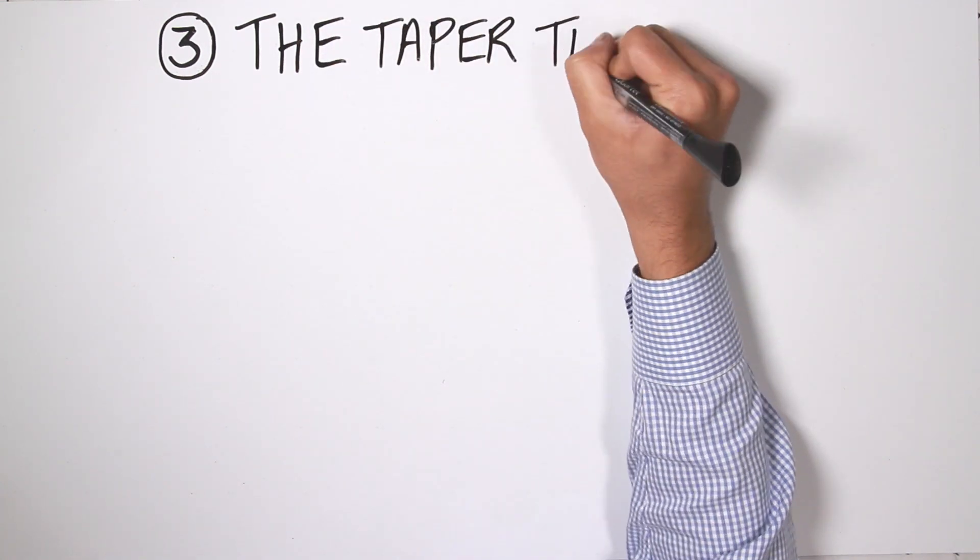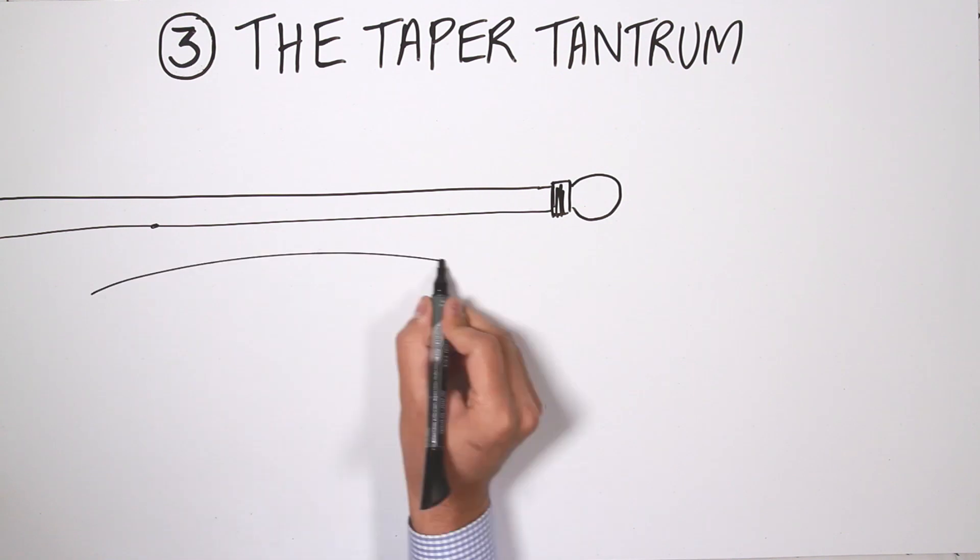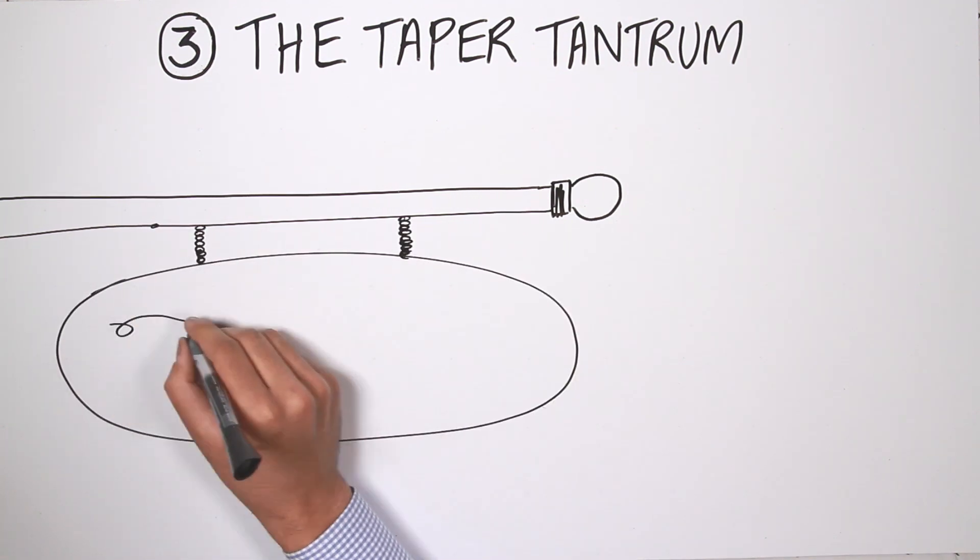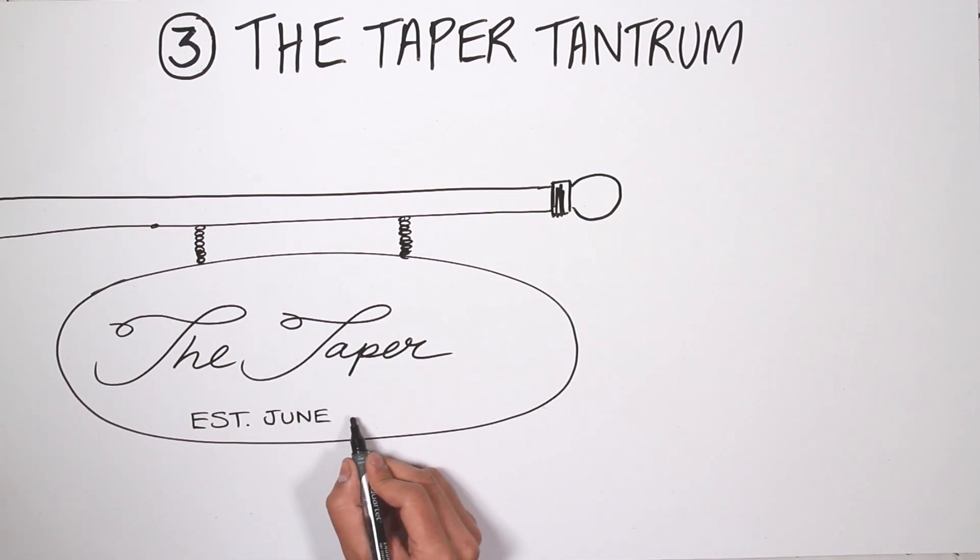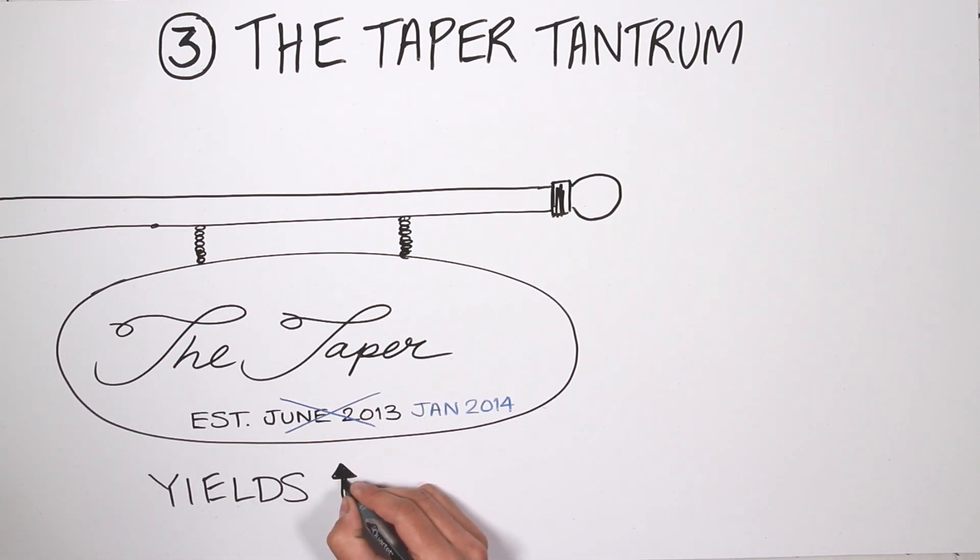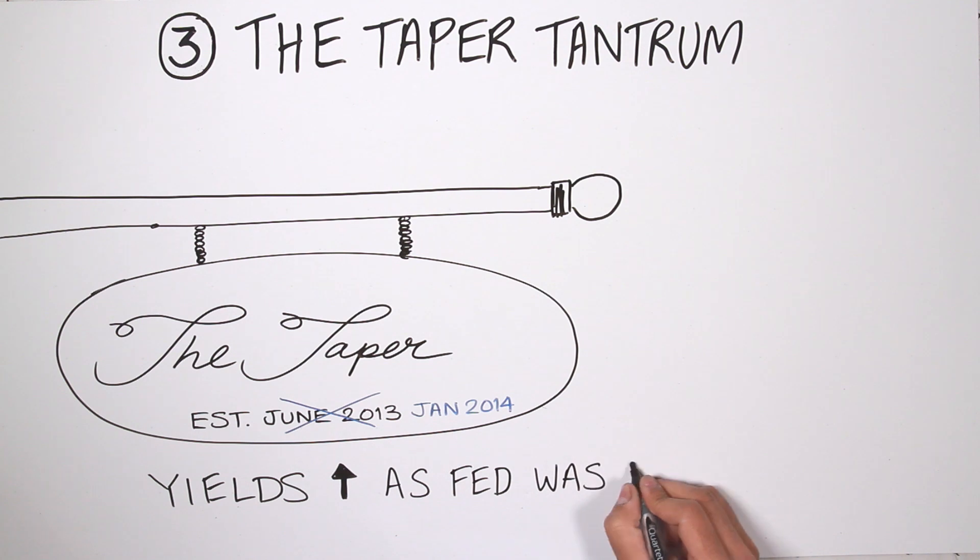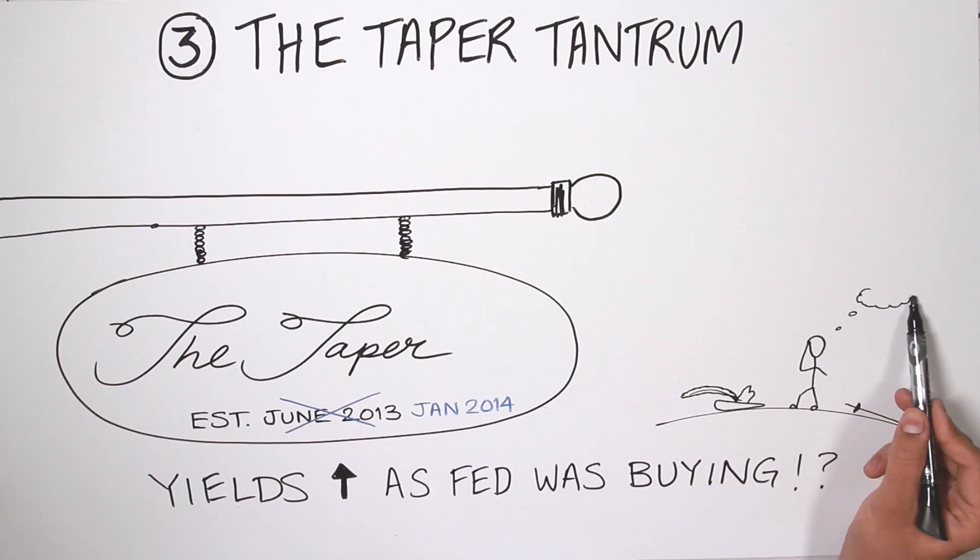We do, though, have one episode of very dramatic moves in longer term interest rates due to central banks. And that is a very memorable one, the taper tantrum. Now, here's the dirty secret about the taper tantrum. The actual curtailment of bond purchases did not begin until January of 2014. However, bond yields moved up dramatically beginning in June of 2013. So the Fed was buying, yet yields were rising. What gives, what explains this episode?